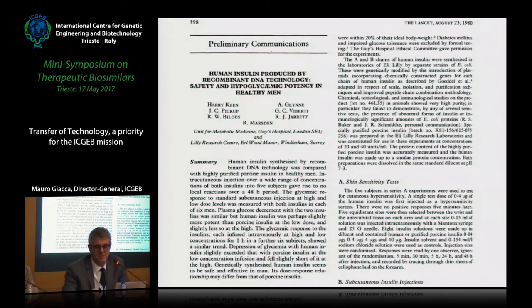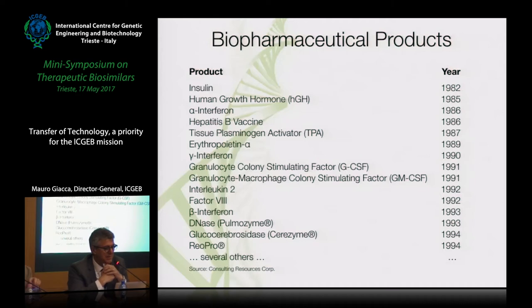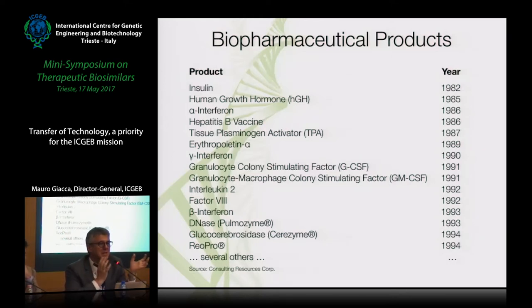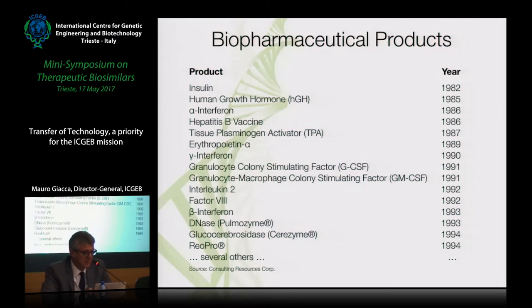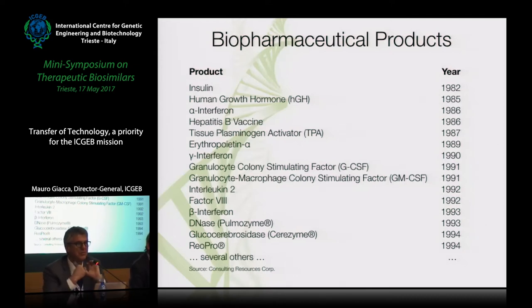You have exactly the same protein that humans produce. This was taken up by Eli Lilly, and in 1982, recombinant insulin became the first product to enter the market. Now millions of people worldwide take this recombinant insulin daily for their survival. After that, there was a rapid pace of growth: human growth hormone in 1985, alpha interferon in 1986, tissue plasminogen activator in 1986, erythropoietin in 1987, gamma interferon in 1989, and so on.